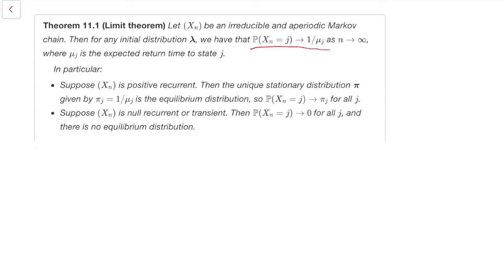And so we have two different cases here, right? Because if we're positive recurrent, then the expected return time is positive, whereas if we're null recurrent or transient, then the expected return time is infinite. And so, in particular,